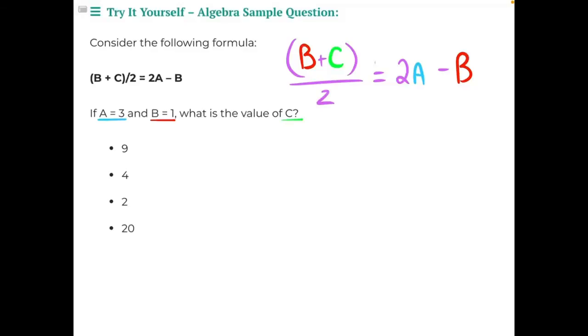Consider the following formula: (B + C)/2 = 2A - B. If A = 3 and B = 1, what is the value of C?